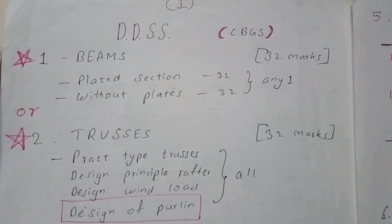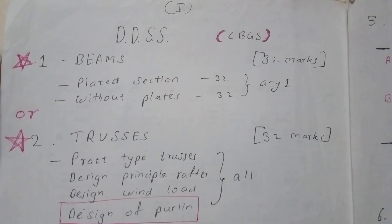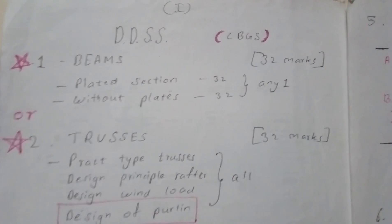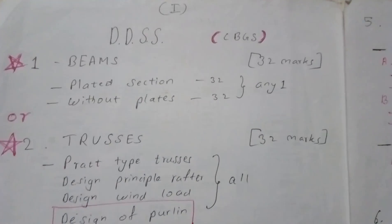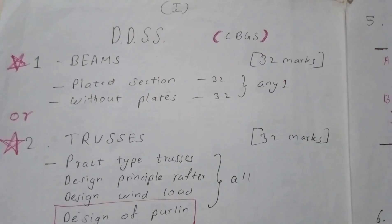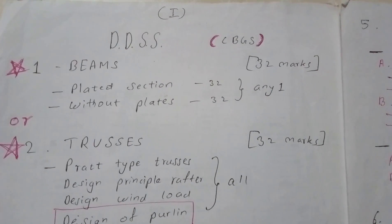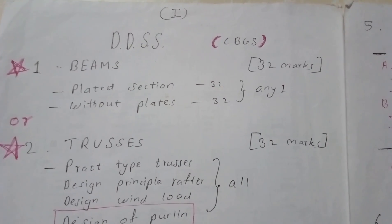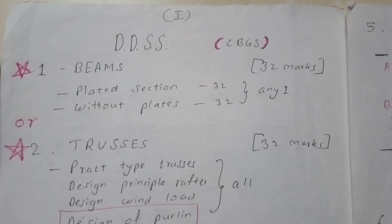The difference between plated and without-plates sections is only two to three steps — in the plated section, we have to design the plates; that's it. The rest of the numerical steps are the same. I suggest you do both types. This first question gives 32 marks.